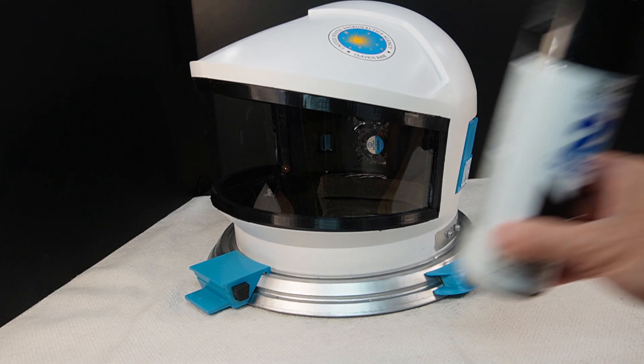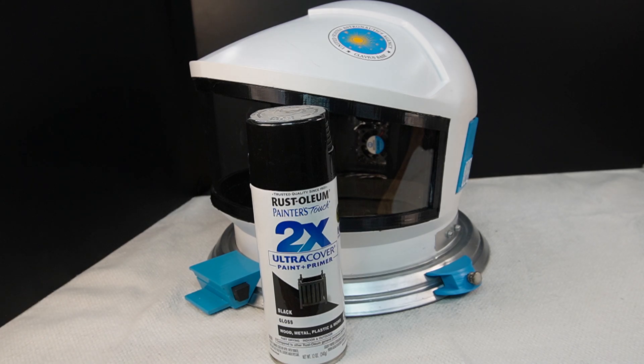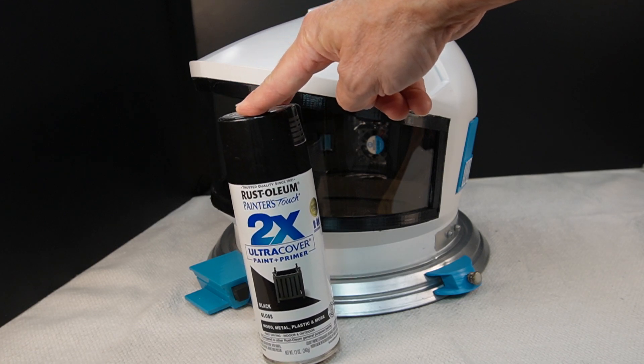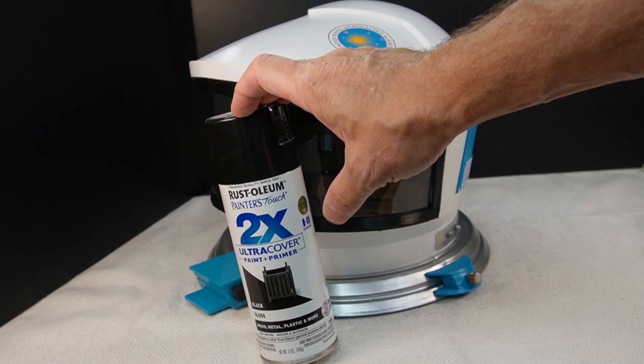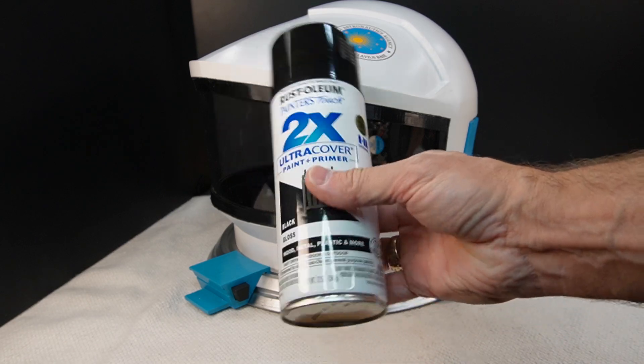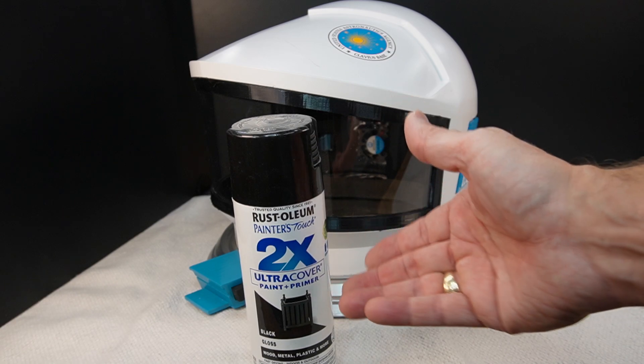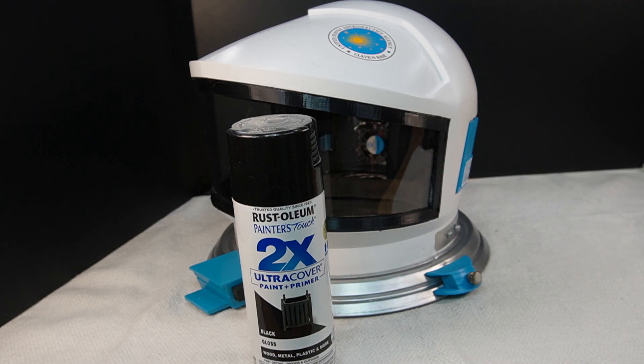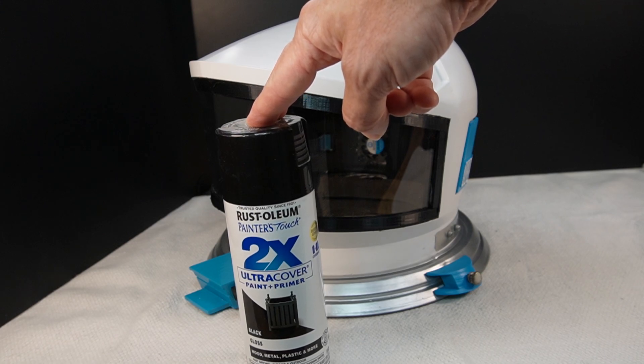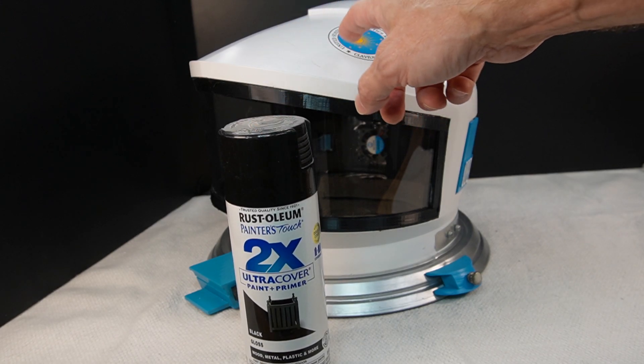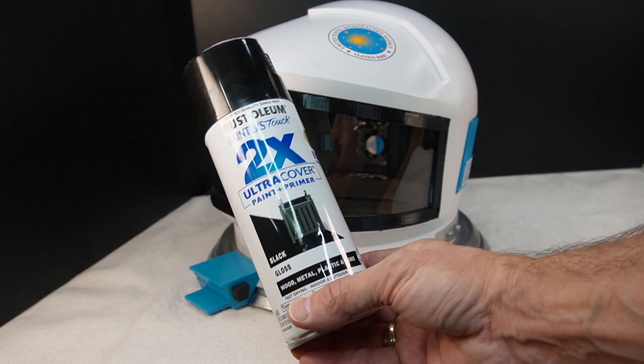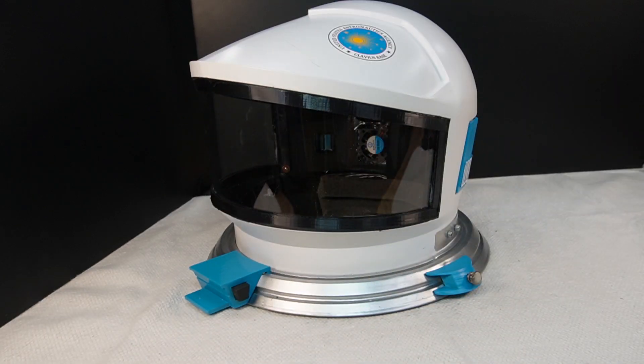Some people talk about using this Rust-Oleum paint and primer in one product. I would say the best place for this product is in the can. This is not for something that you really want to have a professional finish on. This would be more for if you just need something painted real quick and you're not really concerned about how the finish is going to look. So spend a little bit more money and do it right.